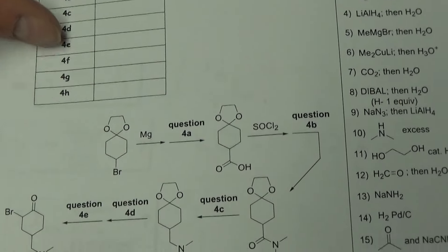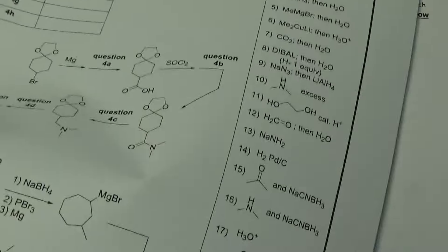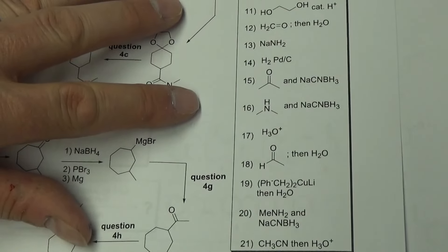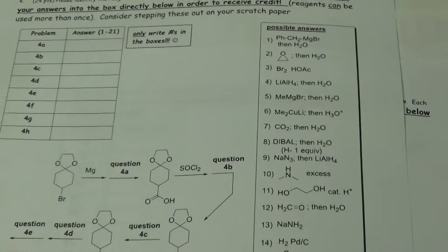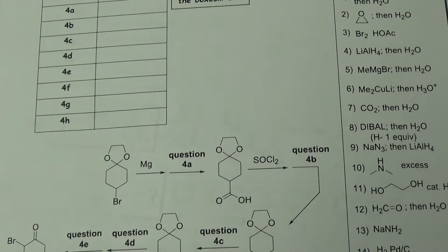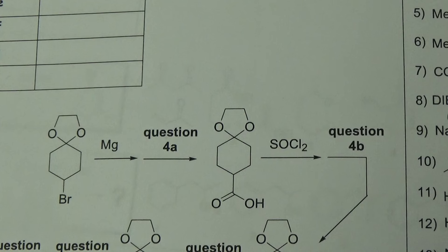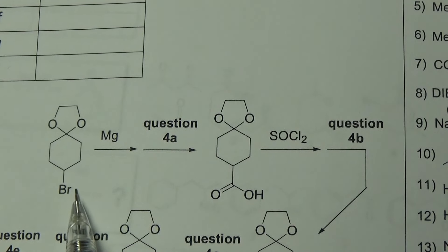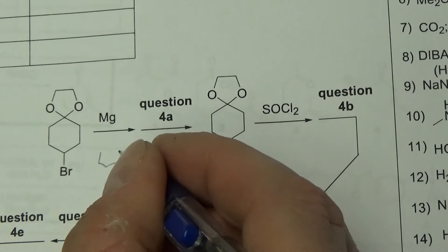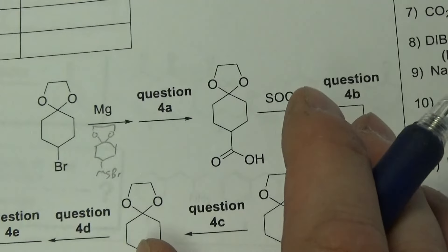So this is the first set of problems where you're given a bunch of reactions and you have to figure out which reagent is appropriate, all the way down to question 21. I'm going to give some general advice. So we're looking at question 4A. We have an alkyl bromide reacting with magnesium — that makes a Grignard. I do recommend drawing out the intermediates on your scratch paper. We have a Grignard MgBr there.